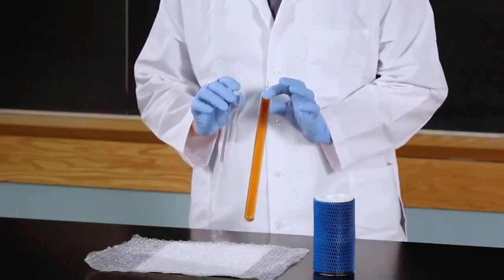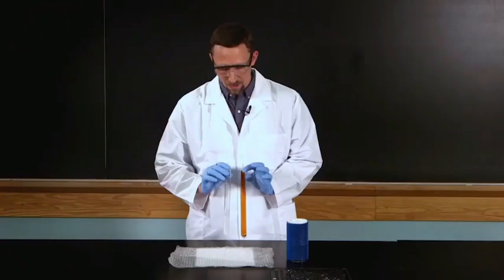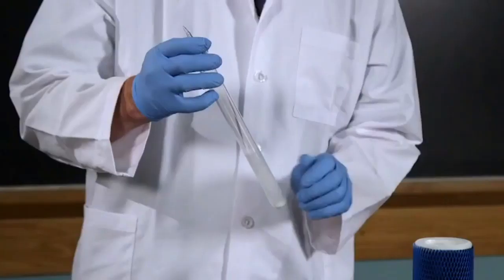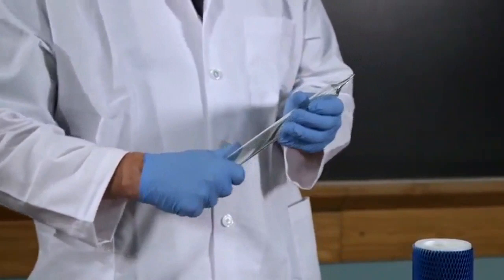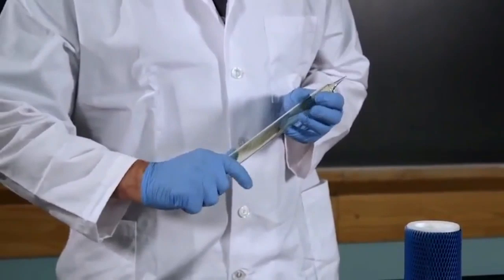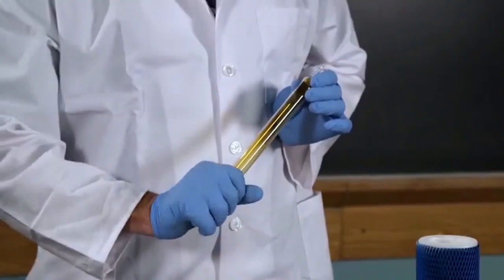Now, as I slowly warm the tube back up, we'll be able to see this equilibrium slowly shifting back in favor of the NO2. I'm just using a little bit of heat from my hand, being careful not to freeze it to the tube, to heat that tube back up. And as you can see, as it gets a little more comfortable to do that, we're already beginning to see the transition back as the equilibrium shifts. Once this tube reaches room temperature, our equilibrium will be right back where it was.